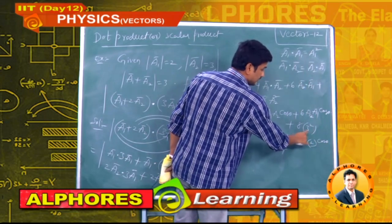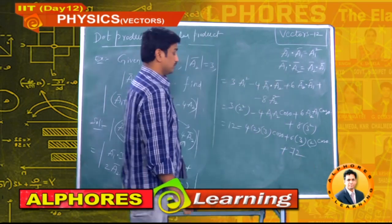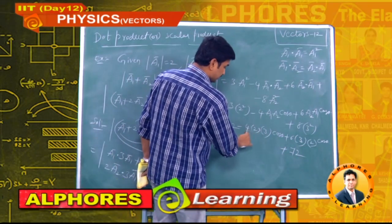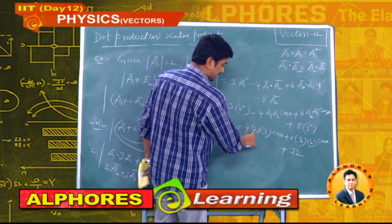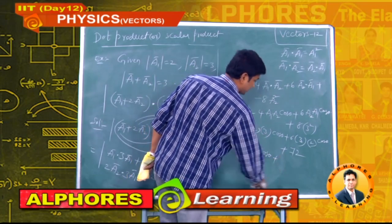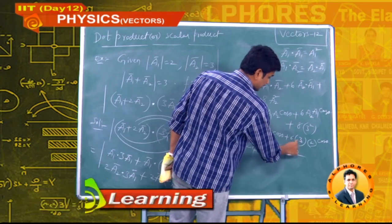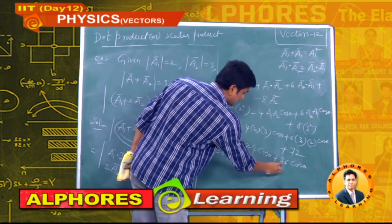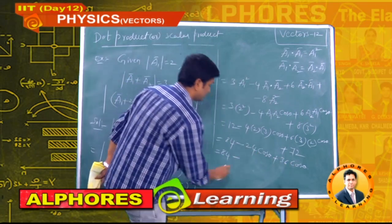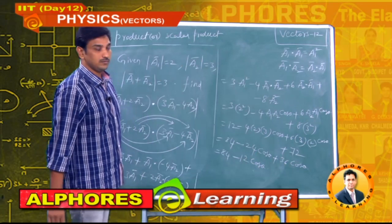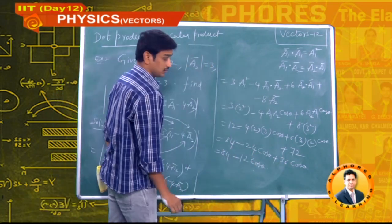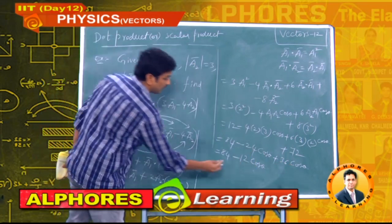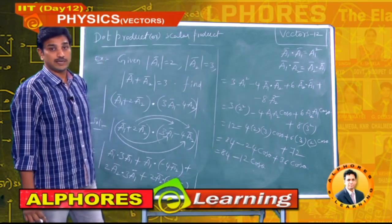Combining: 12 − 72 = −60, and 36cosθ − 24cosθ = 12cosθ. So the expression equals −60 + 12cosθ. To evaluate this, we need the value of cosθ.